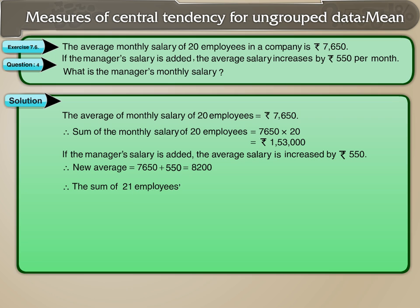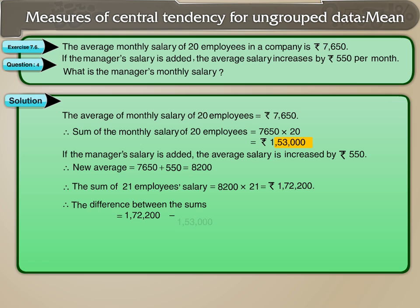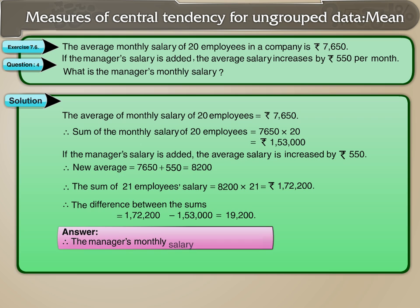The sum of 21 employees' salaries equals Rs. 8,200 times 21, which equals Rs. 1,72,200. Therefore, the difference between the two sums equals Rs. 1,72,200 minus Rs. 1,53,000, which equals Rs. 19,200. Therefore, the manager's monthly salary is Rs. 19,200.